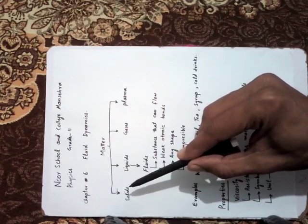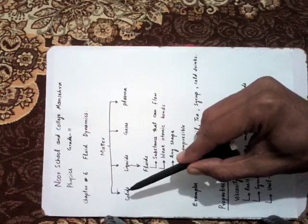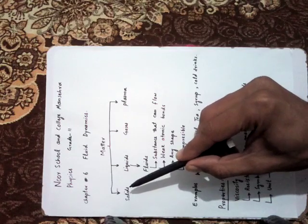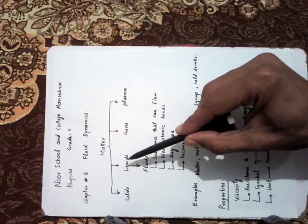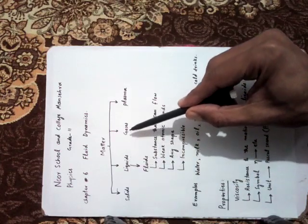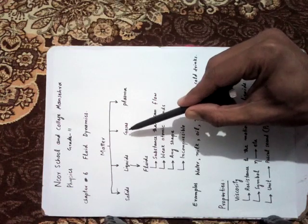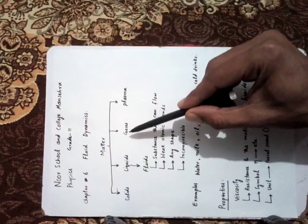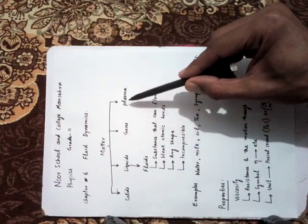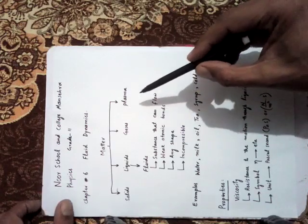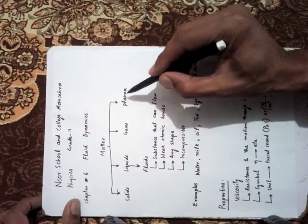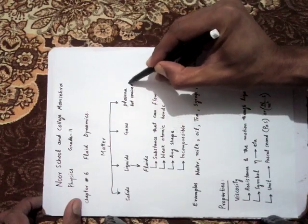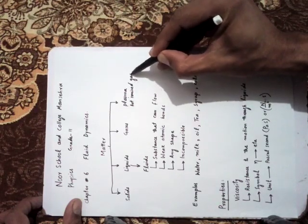Solids are compact objects — they are hard and have definite shapes. In solids, the atoms are arranged very tightly and packed together. In gases, the atoms are very far from each other and there are extremely weak atomic and molecular forces between them.